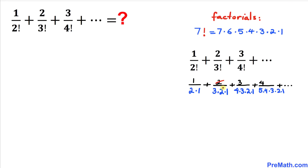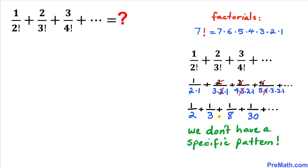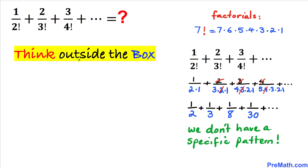We can see that 2 and 2 cancel out, 3 and 3 cancel out, likewise 4 cancels out. Once we simplify, we end up with the infinite series: 1 over 2 plus 1 over 3 plus 1 over 8 plus 1 over 30, and on and on. We can see that this series does not give us any clear pattern, so we are going to think outside the box and take a different approach.